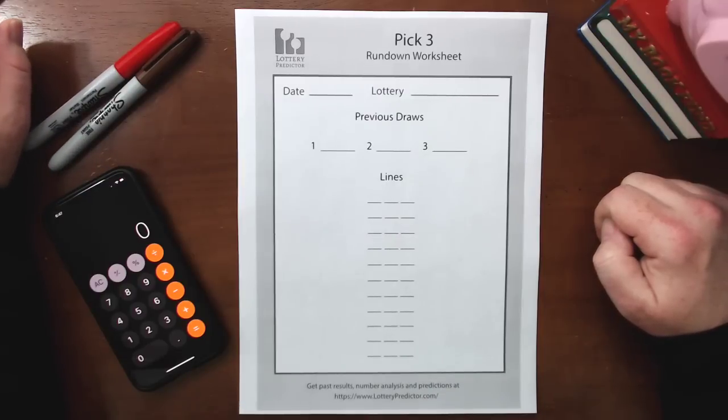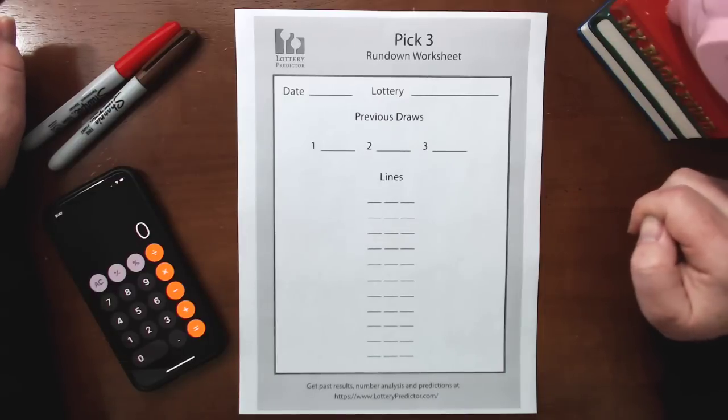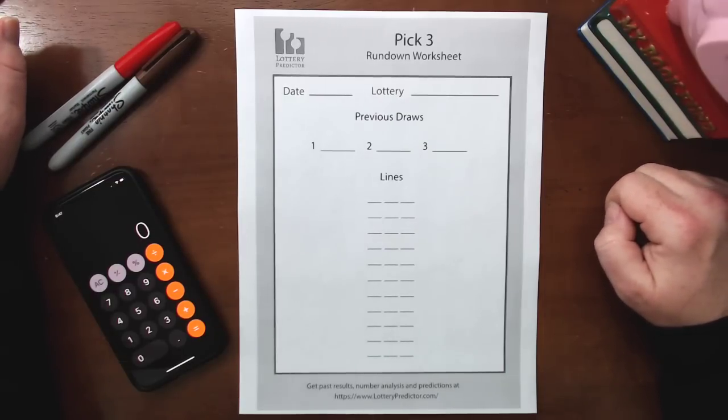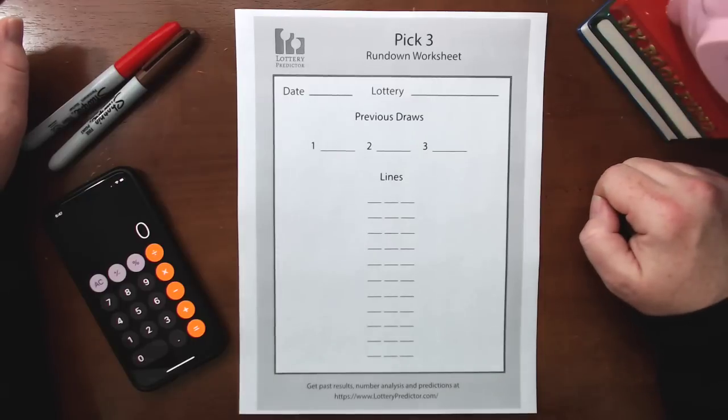Welcome back, lottery fans. Today I'm going to show you a Pick 3 rundown that's going to harness the power of triangles. Why triangles? Well, triangles are a very powerful shape. Pick 3 is three numbers, triangles have three sides.